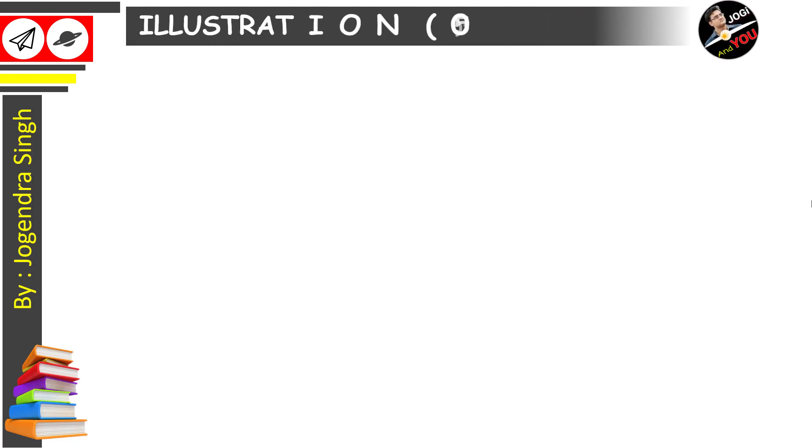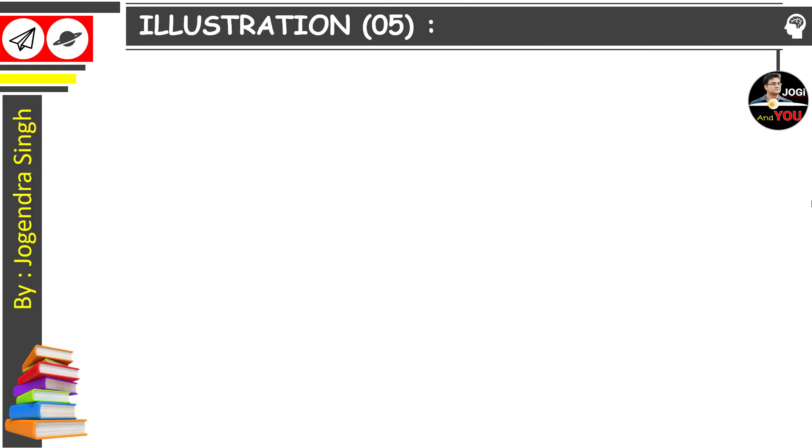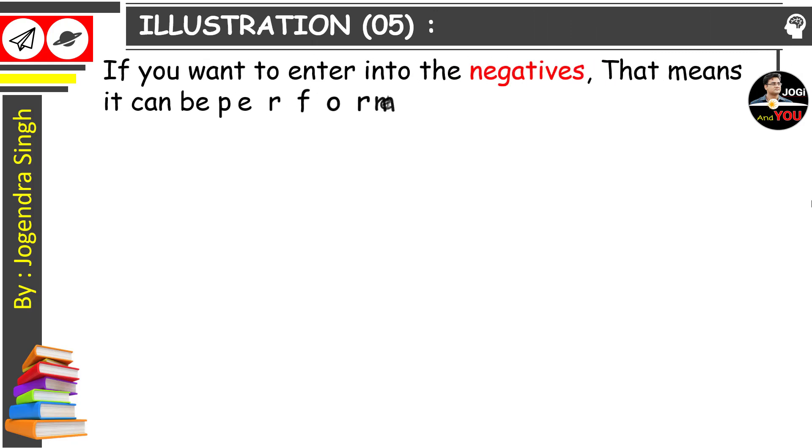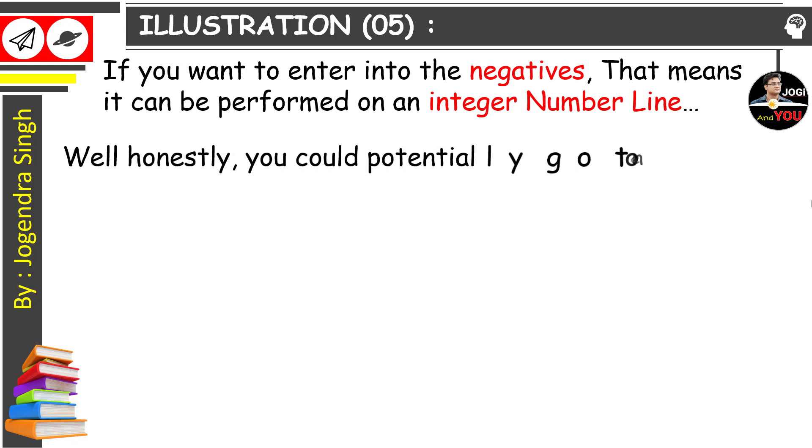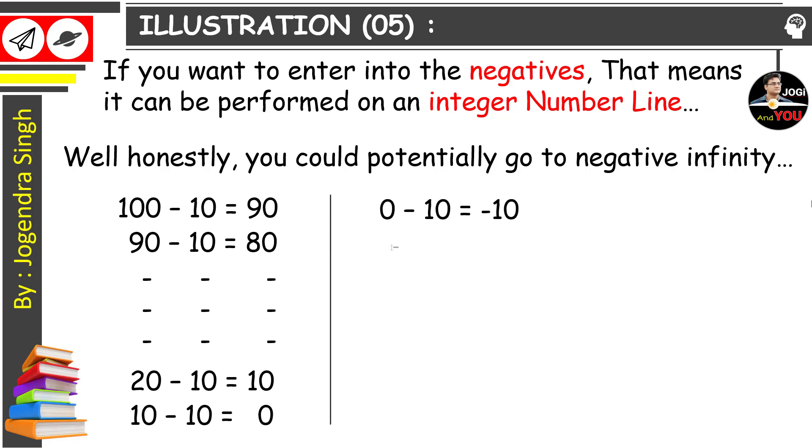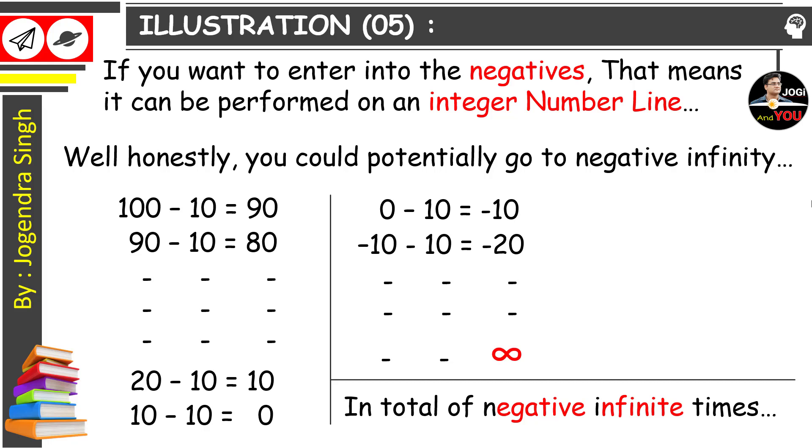And it's time for illustration number 5. If you want to enter into the negative, that means it can be performed on an integer number line. Well honestly, you could potentially go to negative infinity. See how. 100 minus 10 equals 90. 90 minus 10 equals 80, and so on till you get the 0. But don't stop here. Journey will be on till we get negative infinity. So the answer will be in total of negative infinite times.